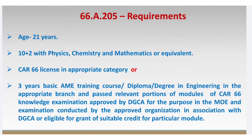The next requirement is a CR-66 license in the appropriate category, or a three-year basic AME training course. If you have a license in the appropriate category — that is B1.1, B1.2, B1.3, B1.4, B2, or B3 — or a degree in the appropriate branch, and you have passed the relevant modules under CR-66 in the applicable category (for B1.1 there are 11 models, for B2 there are 10 models), then you are an eligible candidate for component maintenance.